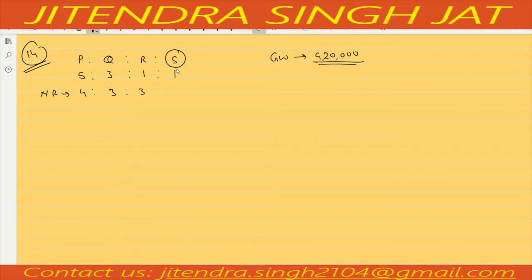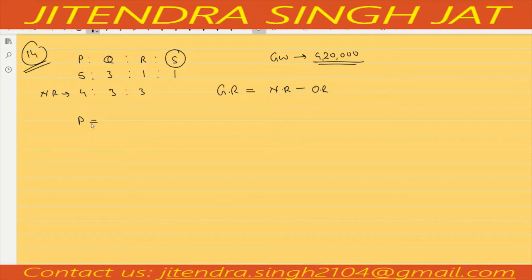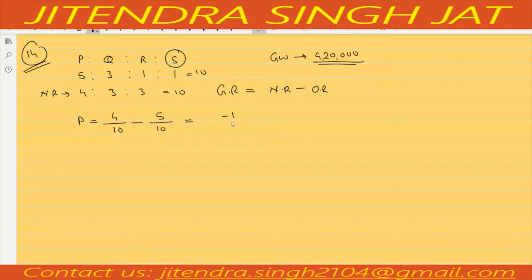S is going out from the firm, so first we need to calculate goodwill, which will be given by the gaining partners. The formula of gaining ratio is new ratio minus old ratio. For P: new ratio is 4/10 (since 4+3+3=10 and 5+3+1+1=10), old ratio is 5/10. So it is 4/10 minus 5/10 = minus 1/10, which means P is sacrificing.